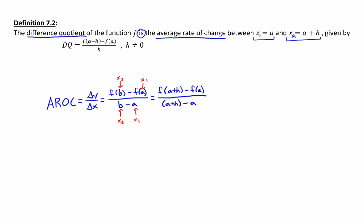Now you can do the average rate of change calculation between any two points that you want, but the difference quotient will always be the average rate of change between a and a plus h. That's what makes the difference quotient different than the average rate of change just by itself.